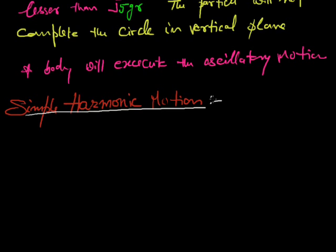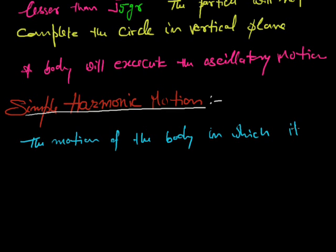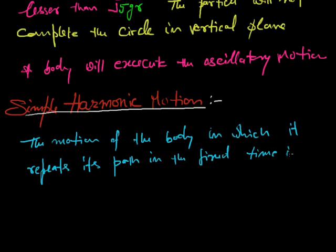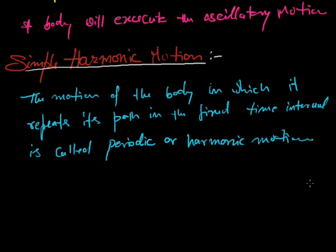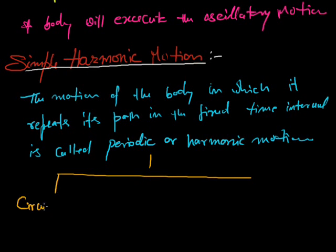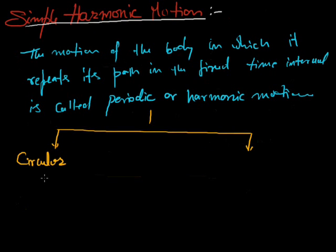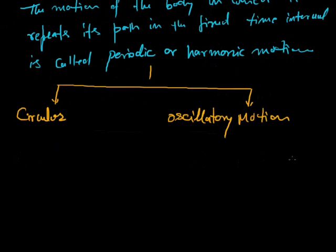Simple harmonic motion is periodic motion. The motion of a body in which it repeats its path in a fixed time interval is called periodic or harmonic motion. It is divided into two parts: one is circular motion and another is oscillatory motion. There are two types of oscillatory motion: linear simple harmonic and angular simple harmonic.